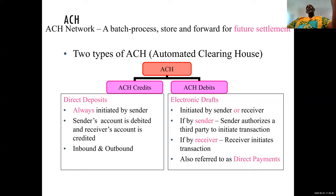Now let's talk about ACH. What happens with ACH is that you push the payments to the bank and the bank processes them bit by bit until all payments are done. Contrary to the wire, which is instant, ACH is actually a batch process — a store-and-forward kind of process. There are two types of ACH transactions: ACH credit and ACH debit.